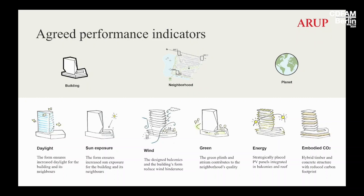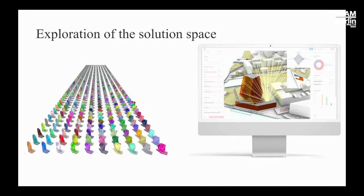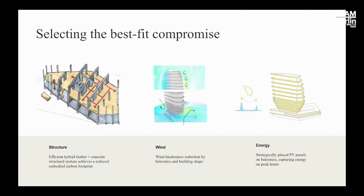Therefore we assessed daylight, sun, and wind. We included green on the building, strategically positioned PV panels, and also tried to reduce embodied carbon. Together with the client and architect we defined variables for how we could play with the shape of the building, leading to a lot of configurations and data-driven decisions — resulting in a competition-winning design. We also wanted to reduce embodied carbon, so we introduced quite some timber structure. We analyzed wind conditions next to the balconies, which helped reduce wind impact at ground and roof levels, and positioned PV panels on the balconies to achieve good PV coverage at peak hours.